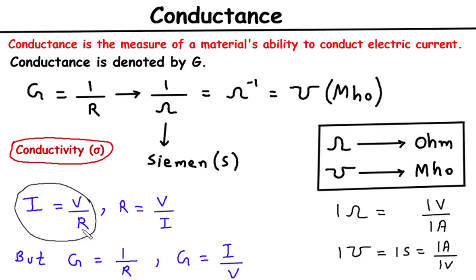Conductance, G, is the reciprocal of resistance, R, so Ohm's law can also be written as G equals I by V. Understanding conductance helps us analyze and predict the behavior of electrical circuits.